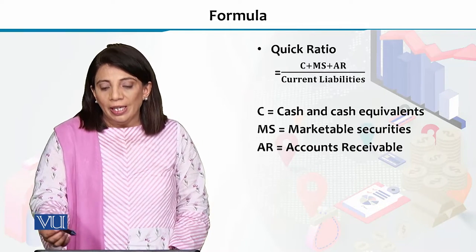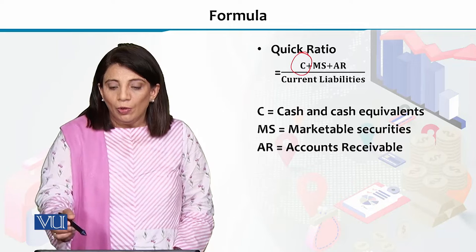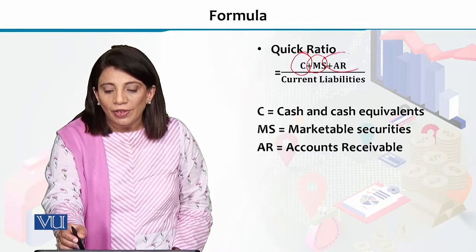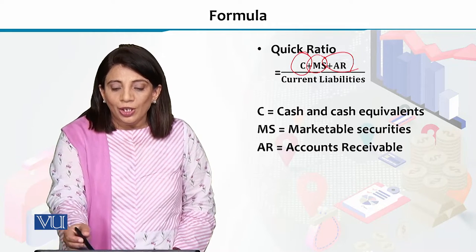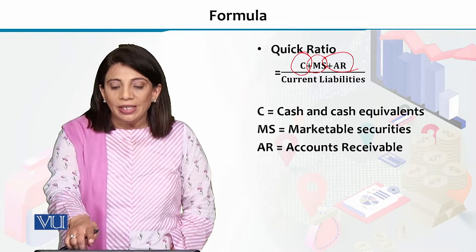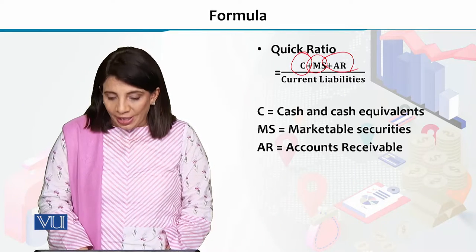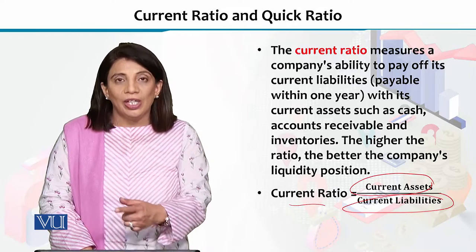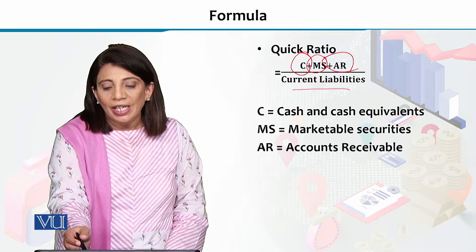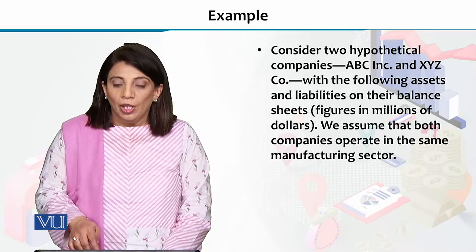For the quick ratio, you take total current assets and from that you deduct the value of inventories. So the value that remains after removing inventories — which is what we discussed earlier as part of the current ratio calculation — is then divided by current liabilities, and you will be able to find out the value for the quick ratio.